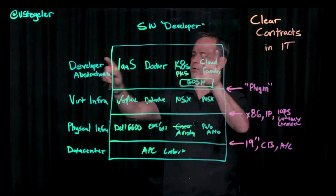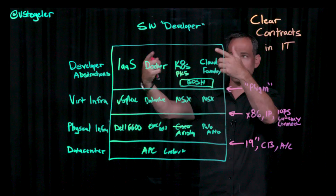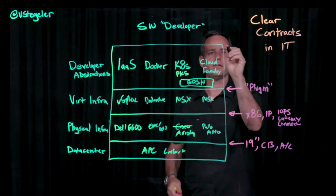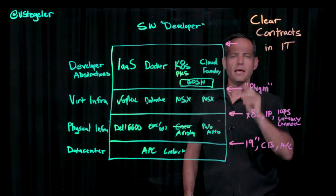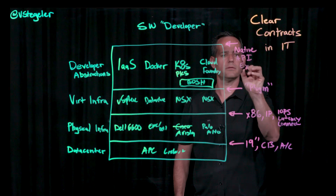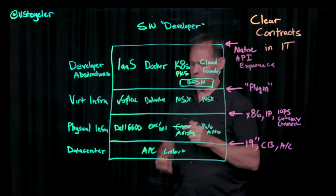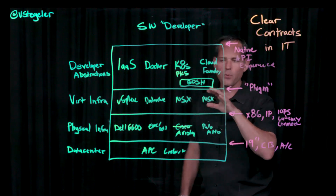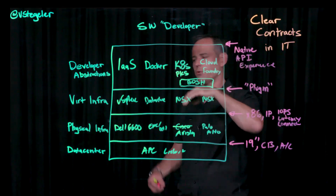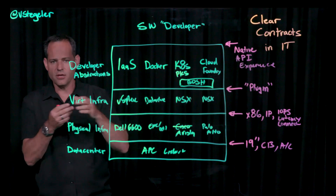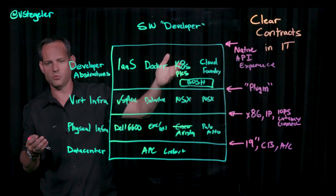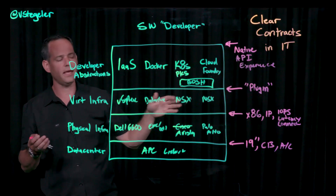So finally, these are the developer abstractions, and now I'm providing this IT service to the software developer. The clear contract with the actual consumer is actually pretty simple: it's about providing the native API experience. For container technologies like Kubernetes, I want to provide Kubernetes in a native way — using upstream Kubernetes — so the software developer can go to Google, search, and figure out how to do things, rather than using some proprietary version that requires a completely different API and makes things difficult.